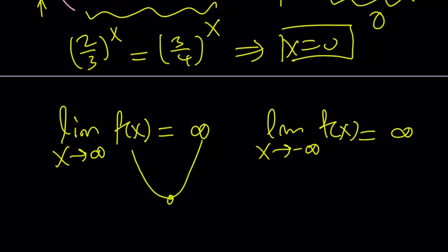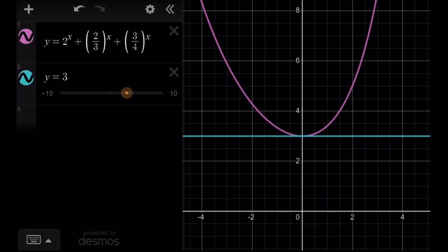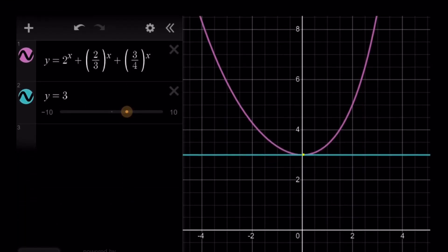So our function comes from infinity and goes to infinity, so it has to have a minimum at x equals 0, and that is the only solution. Let's take a look at the graph. So here's the graph of our function intersecting y equals 3 at a single point because that is the minimum value for our function at x equals 0. Therefore, x equals 0 is the only solution to this equation.